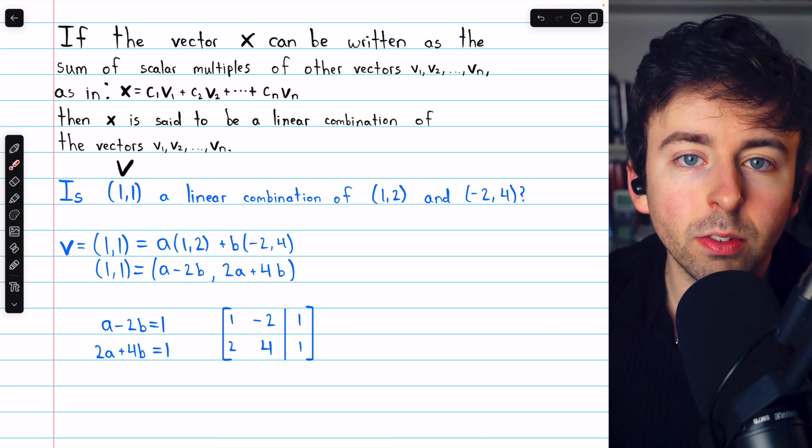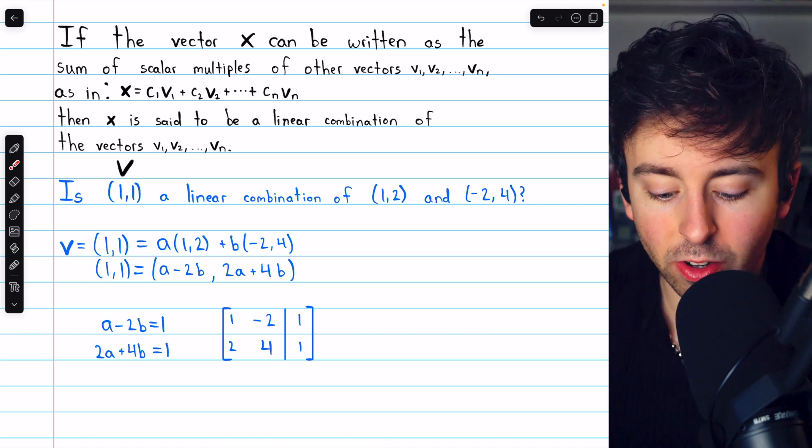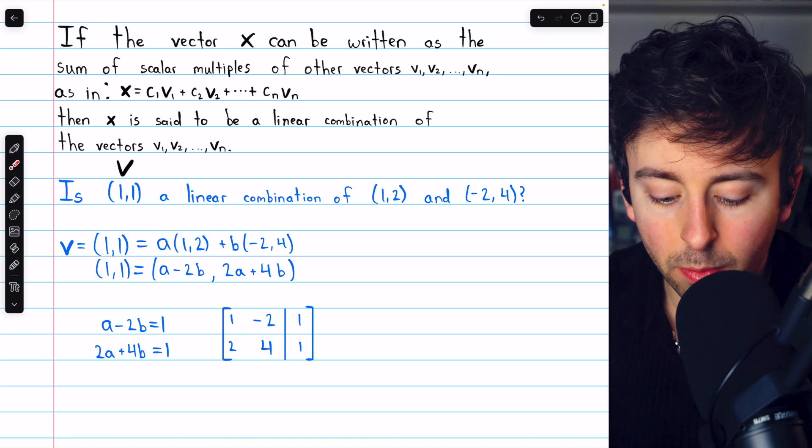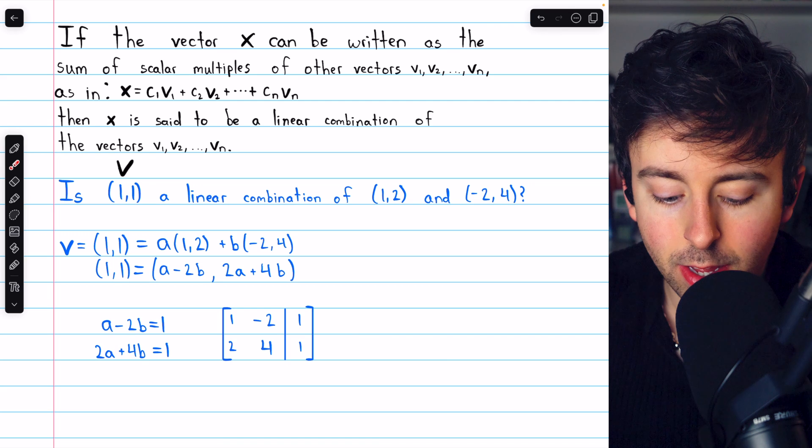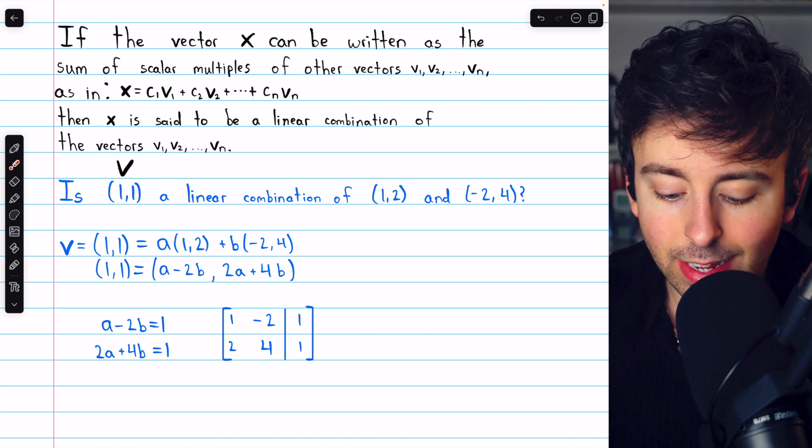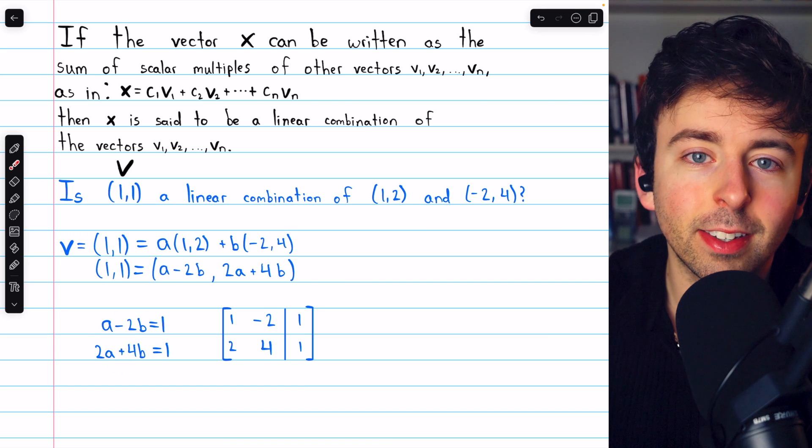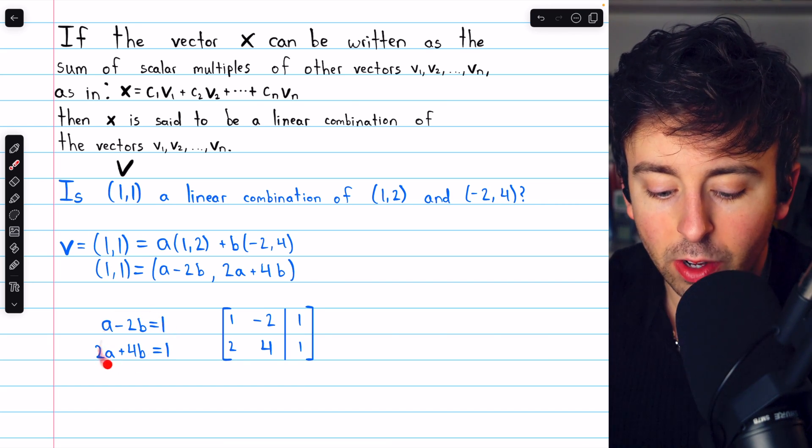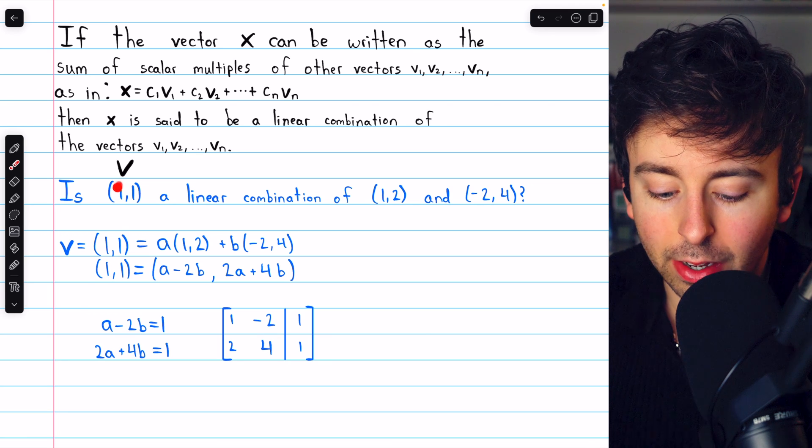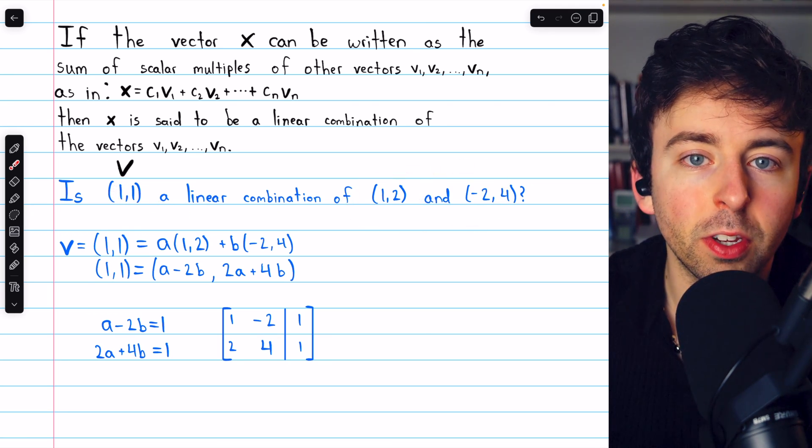Thus, equating components, we get a system of linear equations. We have that 1 must equal a - 2b, and that 1 must equal 2a + 4b. If this system is consistent, that is, there exist values for a and b that make these equations true, then yes, the vector v is a linear combination of these other two.